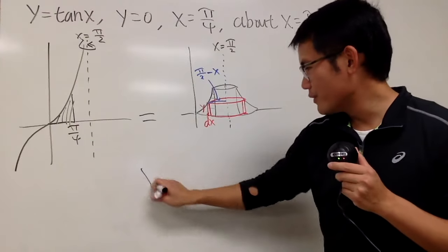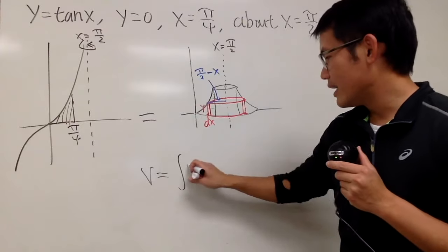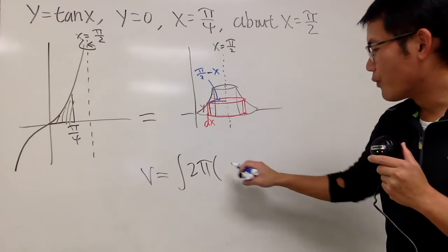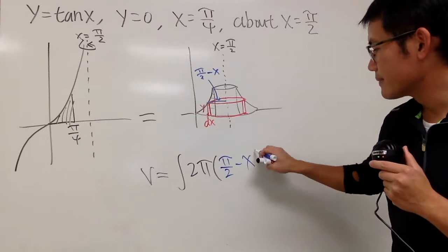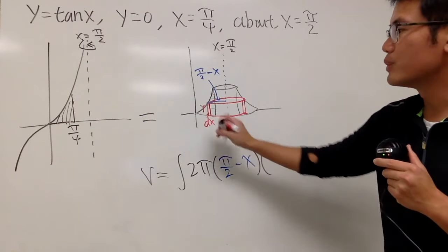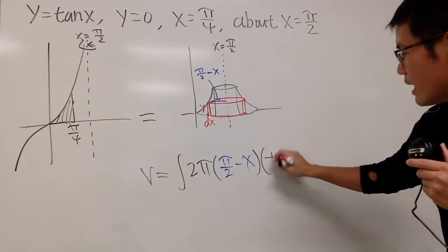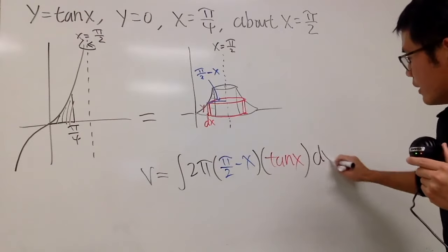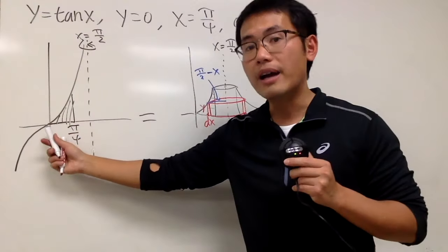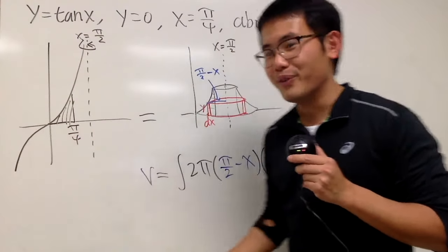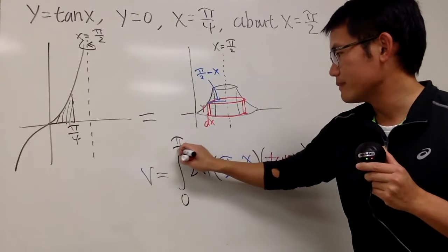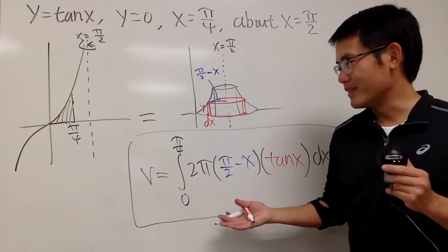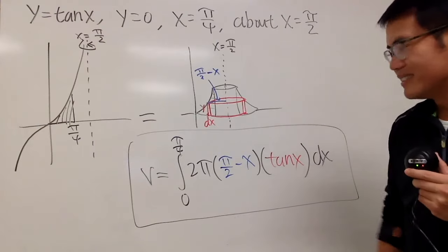The volume equals the integral of 2π times (π/2 − x) times tan(x) dx, integrated from x = 0 to x = π/4. You must express y as tan(x) since we're in the x world. And that's the integral for the volume. The shell method is really cool — hopefully the more you do it, the more fun and easier it becomes.